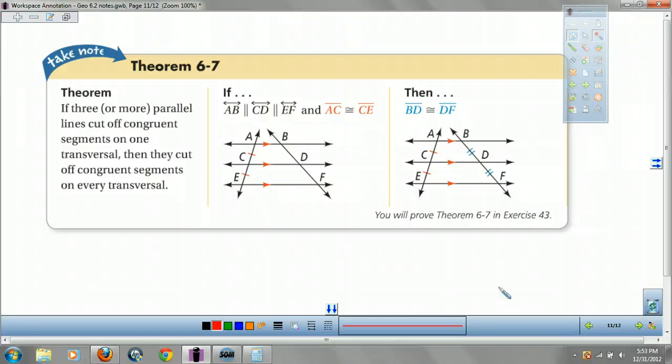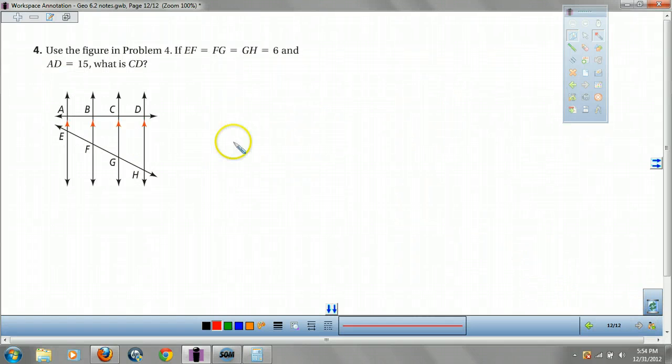Last theorem. If you have a pair of lines, and you have a transversal that goes across them, if it cuts one of the transversal in equal parts, it cuts any transversal in equal parts, because they are equal distance from each other. Use the problem. If EF equals FG equals GH, and IJ equals 6, and AD equals 15, what is CD? Well, if this is cut into congruent parts, this one's cut into congruent parts. If your total is 15, and you cut it into 3 equal parts, each one will be 5. And that's it, guys. That's where we'll end it.